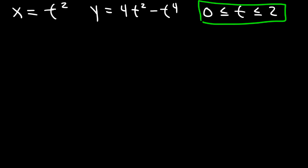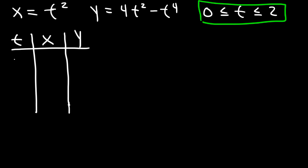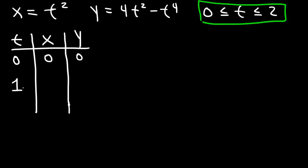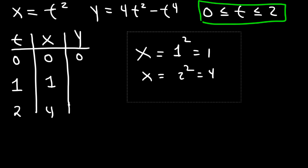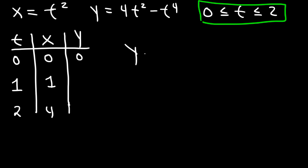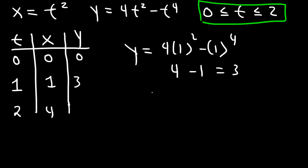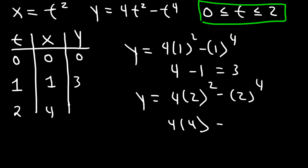Let's begin by graphing this parametric function. Let's make a table with t, x, and y. When t is 0, x is 0 and y is 0. When t is 1, x is 1 squared which is 1, and y is 4 minus 1 which is 3. When t is 2, x is 2 squared which is 4, and y is 4 times 4 minus 16, so 16 minus 16 is 0. So y is 0.